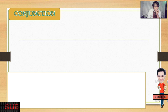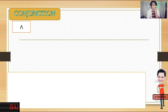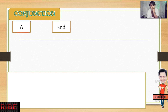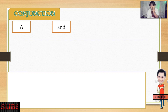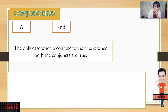Next, we proceed to conjunction. In English subjects, they have conjunction also. In logic, we have conjunction using this symbol — the inverted V. We are going to use the word 'and.' There are other words related to conjunction, but we are going to focus first on 'and.' The only case when a conjunction is true is when both conjuncts are true.